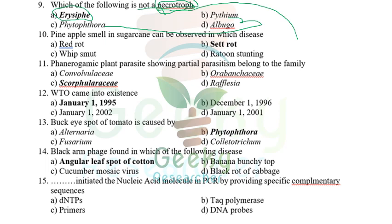All powdery mildews are biotrophs, otherwise called obligate parasites. The pineapple smell in sugarcane can be observed in which disease? It is not red rot or whip smut — the pineapple smell is seen in citrus rot (citrot). Citrot-infected plants produce a pineapple smell.